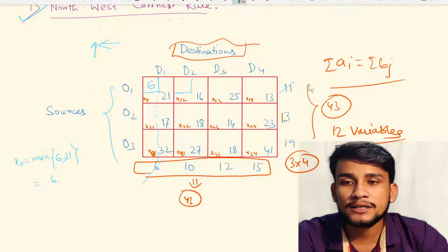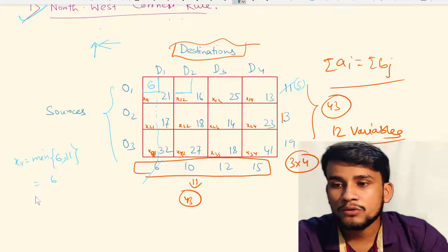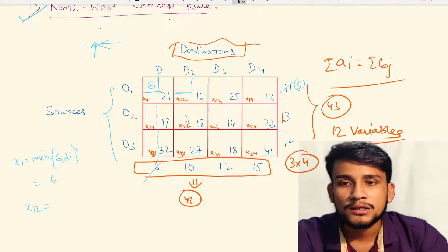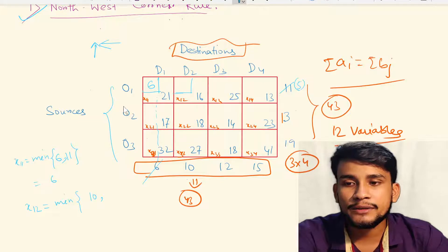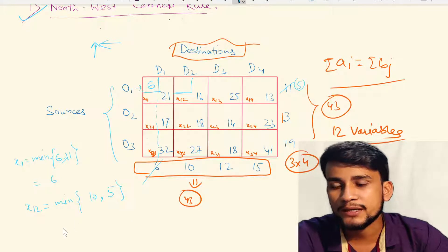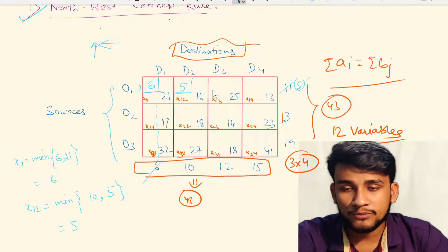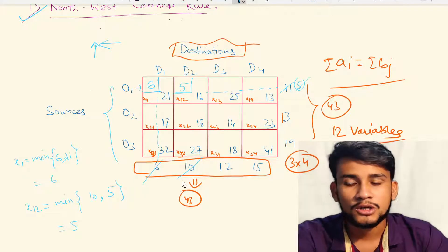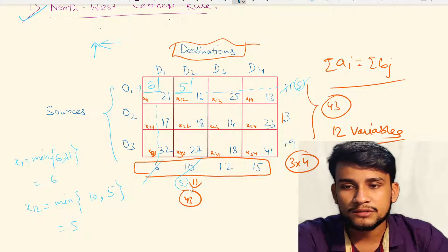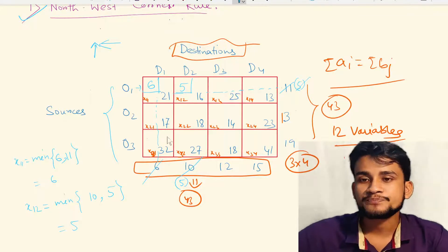The next cell is x12. x12 = minimum(demand of D2, remaining supply of O1) = minimum(10, 5) = 5. We write 5 here. The total supply from O1 is now exhausted. The remaining demand for destination D2 is 5 units.